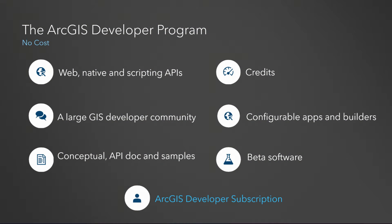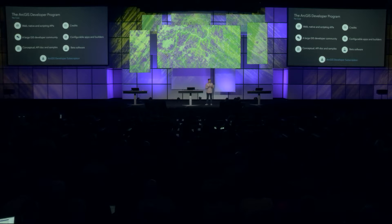The program gives you access to tooling, software, and technology to help you be productive and successful when developing with the ArcGIS platform. You'll get access to our client APIs — the web, native, and scripting APIs — credits to work with ArcGIS Online services, a large GIS developer community you can communicate with via Slack or GitHub, early access to beta software, and conceptual and API documentation along with a huge library of samples.